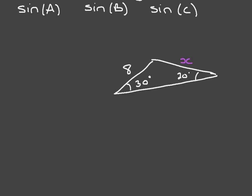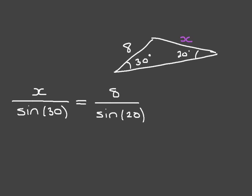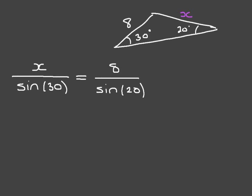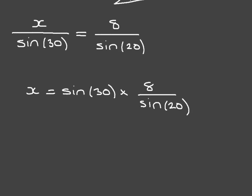We can go ahead and write that the side length X divided by the sine of its opposite angle 30 has to equal the side length 8 divided by the sine of the opposite angle 20. We can rearrange this to isolate X — if we multiply both sides by sine of 30, this leads us to X = sine(30) × 8 / sine(20). Using a calculator and rounding to one decimal place, we find X is equal to 11.7.